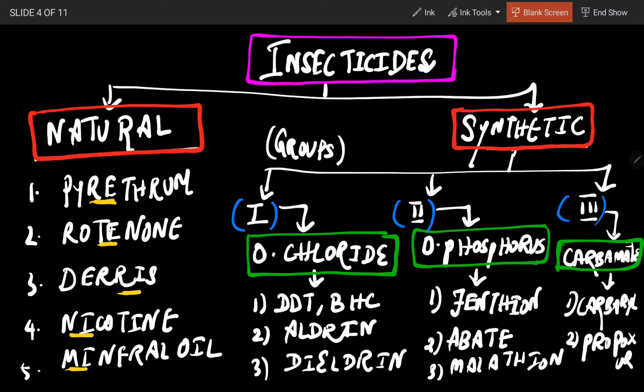We will now see the insecticides. We basically classify them as Natural and Synthetic Insecticides. Under Natural insecticides, we have some similar rhyming names. First is Pyrethrum, Rotenone, Derris, Nicotine, and Mineral Oils.